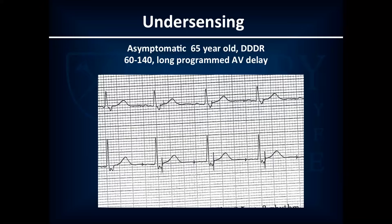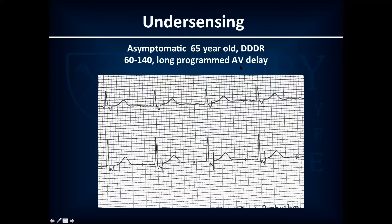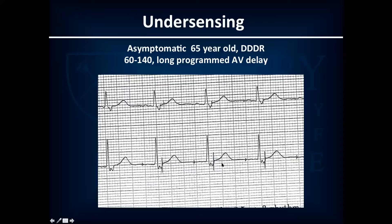Here's an asymptomatic 65-year-old with a DDDR programmed with a long AV delay. There's an A spike and V spike. The sensing abnormality is ventricular undersensing — it's pacing appropriately but then undersensing the V because there's a pacing spike after the intrinsic QRS complex. The intrinsic QRS happens after the A pace, the V doesn't see it and says I don't see a V, I better time out and pace. This is ventricular undersensing — more spikes than you'd expect.